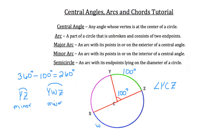All of this region right here would be the semicircle. And a semicircle is always going to have an arc length of 180 degrees, because a diameter always cuts a circle in half. And half of 360 degrees — the distance around the circle — is 180. So in this case, semicircle X, W, Z has an arc length of 180 degrees.